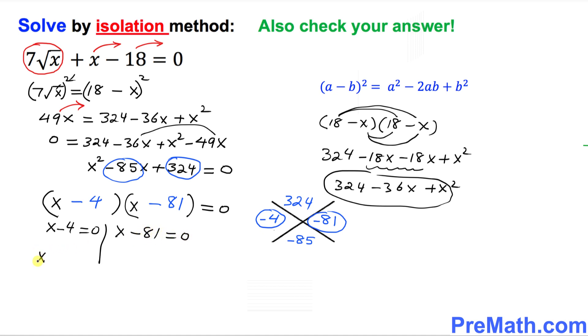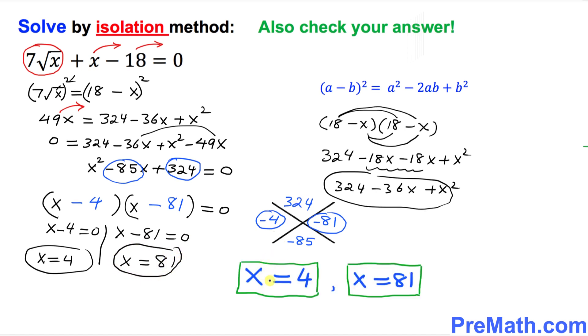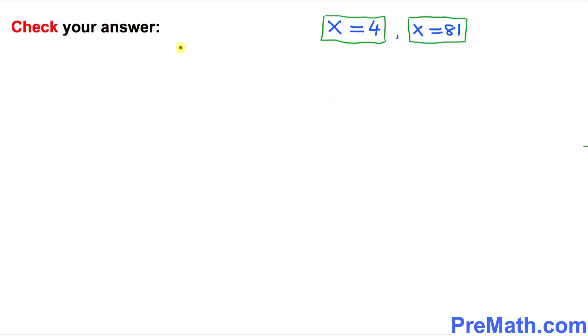So one of the solution is x equal to 4 and the other one is x equal to 81. So our two solutions are x equal to 4 and x equal to 81. In the next step, we're going to check these solutions. So now we're going to check our answers. We know we have two solutions, x equal to 4 and x equal to 81.